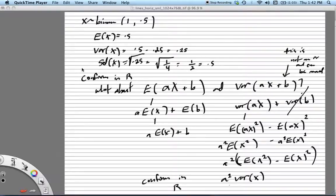I've chosen a very simple random variable, just a coin toss. We know that the expected value is 0.5, the variance is 0.25, and the standard deviation is the square root of that, which is 0.5.